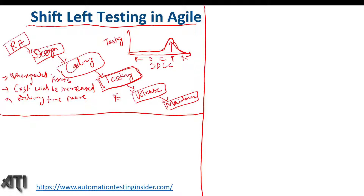This is why we go for shift left testing. Shift left testing is a practice intended to find and prevent defects early in the software development life cycle process. We do the testing as early as possible.